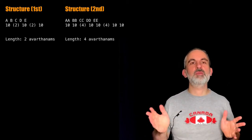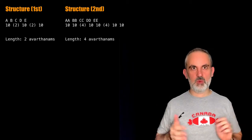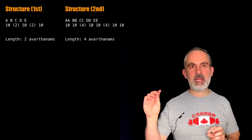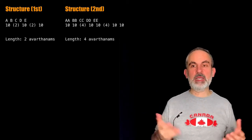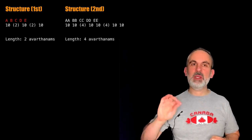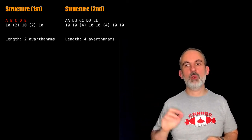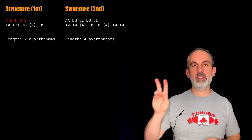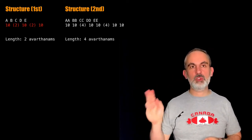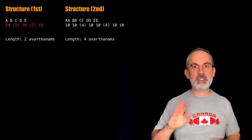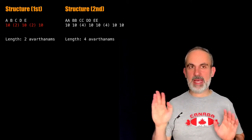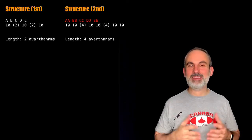In the first korvai, we had the first line — the purvangam — which was A, B, C, D, E. And then the uttarangam was 10, 2 gap, 10, 2 gap, and 10.